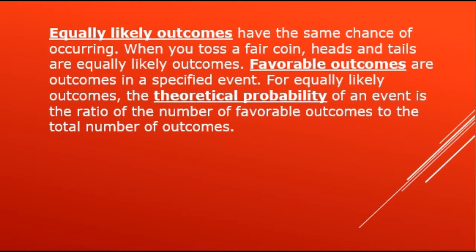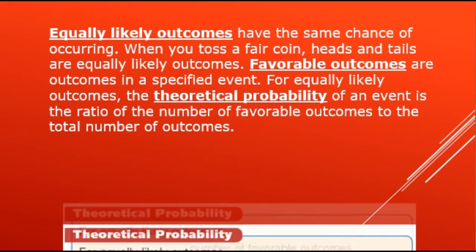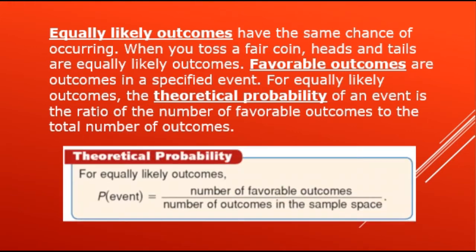Equally likely outcomes have the same chance of occurring. When you toss a coin, heads and tails are equally likely outcomes. Favorable outcomes are outcomes in a specified event. For equally likely outcomes, the theoretical probability of an event is the ratio of the number of favorable outcomes to the total number of outcomes. So the formula is: P(event) = number of favorable outcomes over number of outcomes in the sample space.